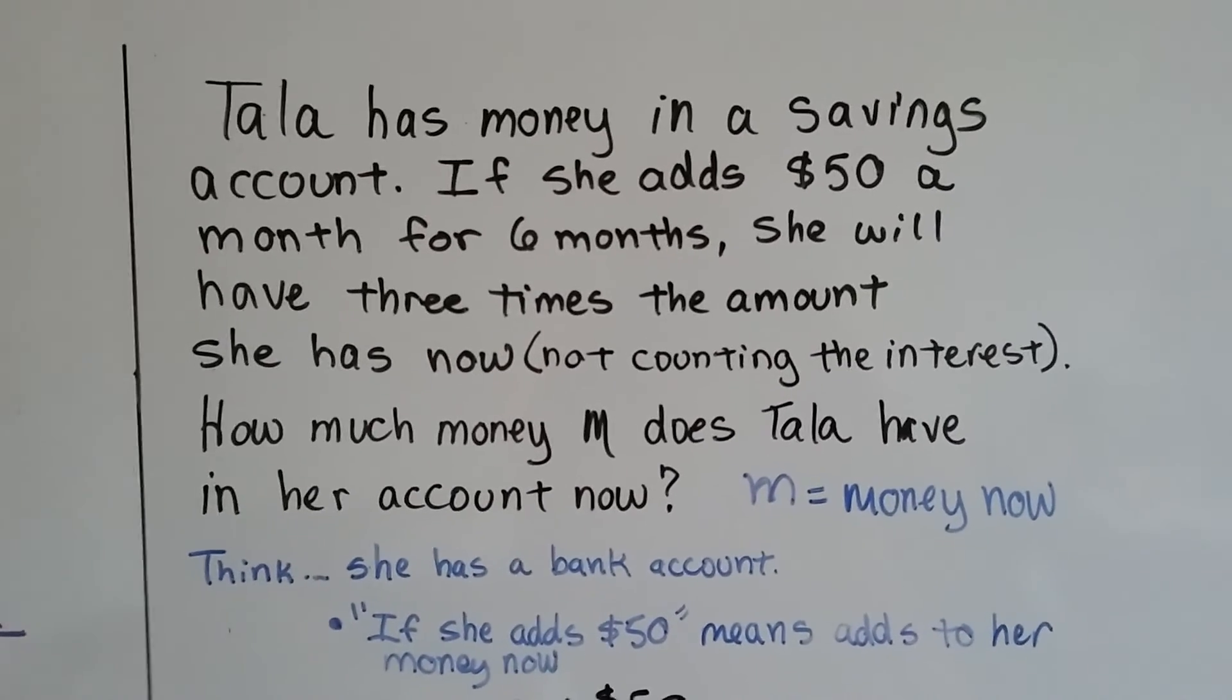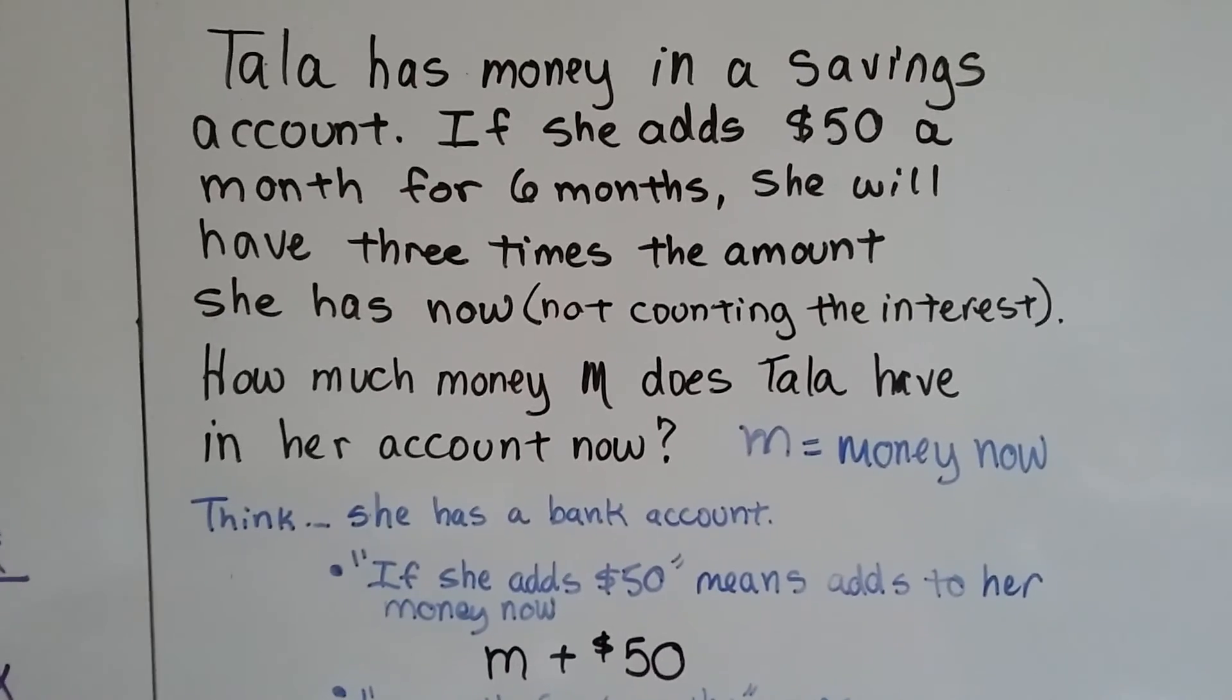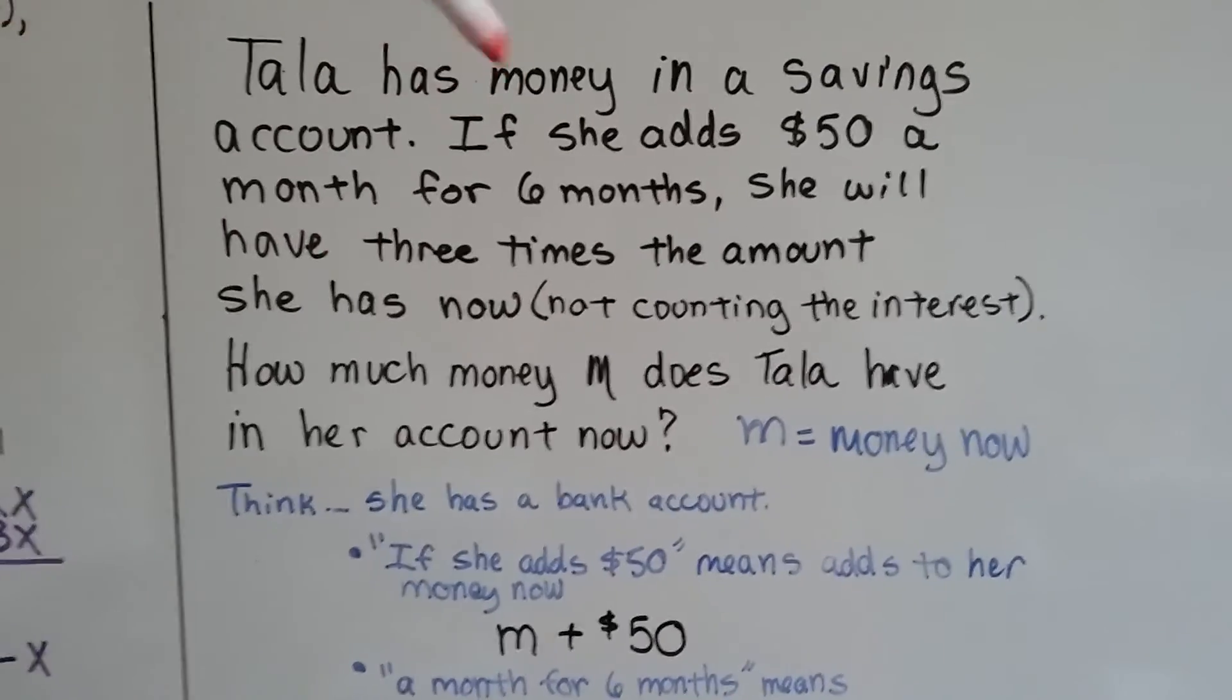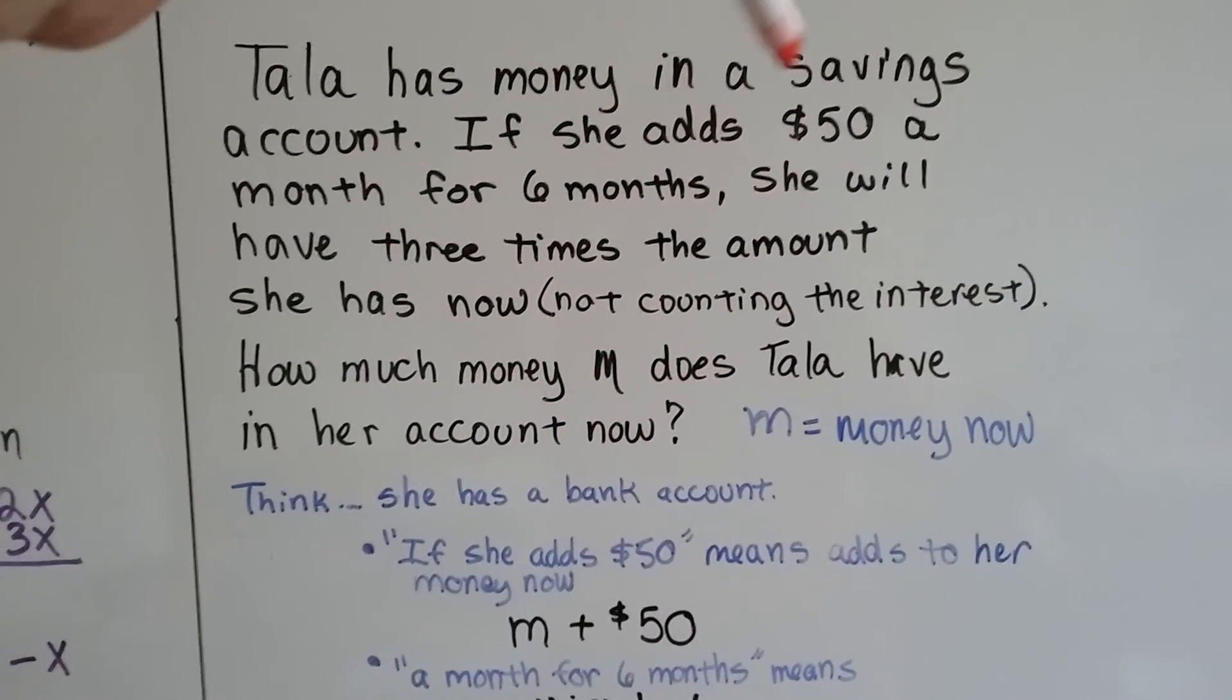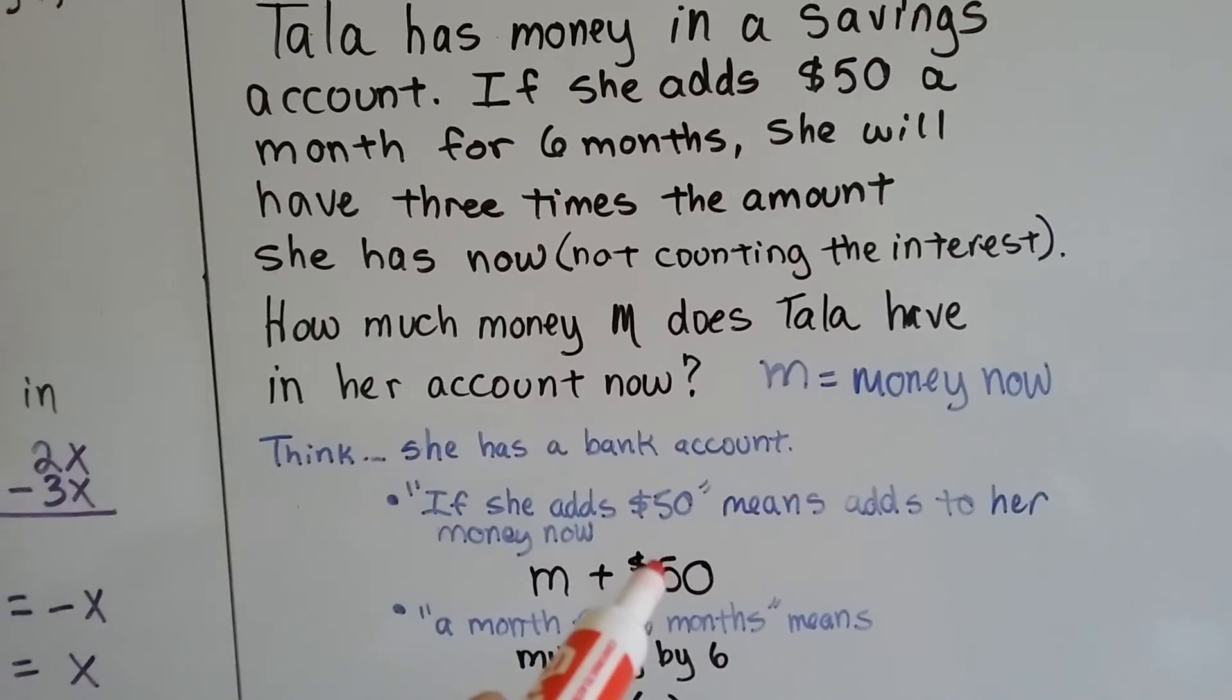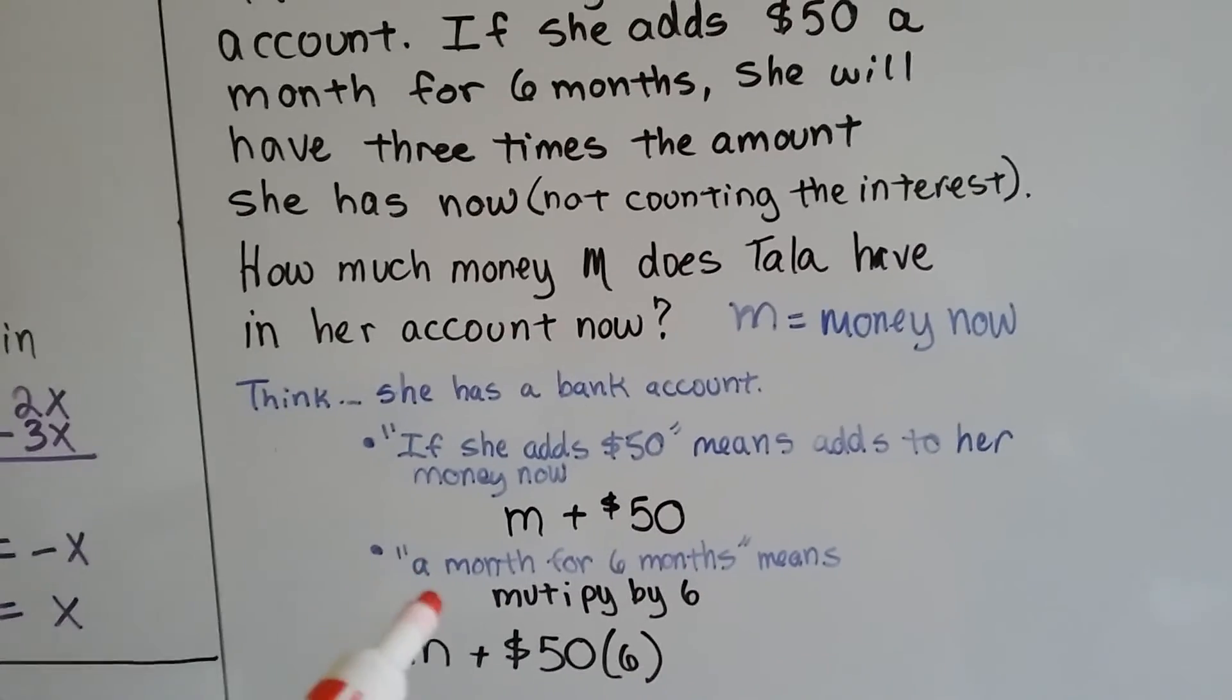And it says, if she adds $50, well that means she's going to plus $50. Now it says, to her money now. So, we have to think that it's being added to her M, to her money now, if she adds $50 a month. Keep in mind that that money is already sitting in the account. And she's adding this $50 to it. So now we have M plus 50.